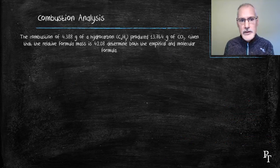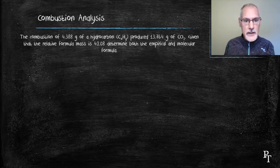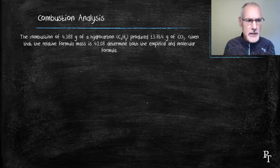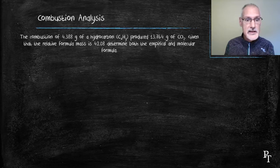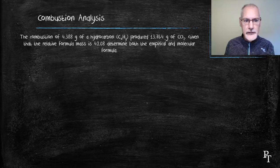Now, let's take a look at how we can take combustion analysis or a percent composition question and using molar mass information actually come up with both the empirical and the actual molecular formula of a compound. For my example, I'm going to burn 4.388 grams of a hydrocarbon, meaning it only contains two elements, hydrogen and carbon. It produced around 13 grams of carbon dioxide. I also have some information about the formula mass of my product, it's 42.08.